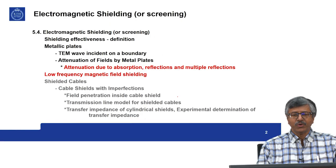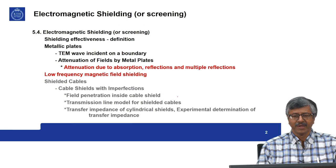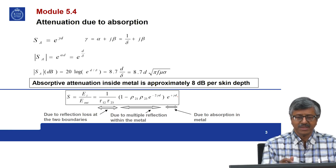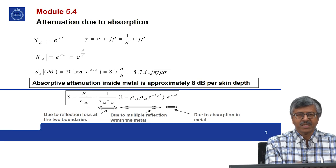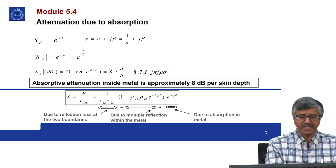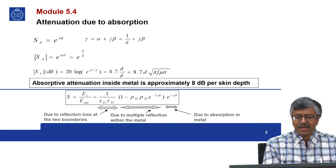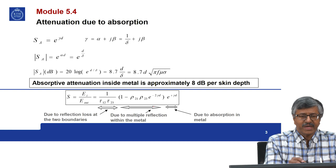We continue with electromagnetic shielding. Topics include attenuation due to absorption, reflections, multiple reflections, and low frequency magnetic field shielding. Previously we have already seen this equation. Total shielding effectiveness is composed of three factors: one factor due to reflection loss at the two boundaries, one factor due to absorption in the metal, and one factor due to multiple reflections within the metal.